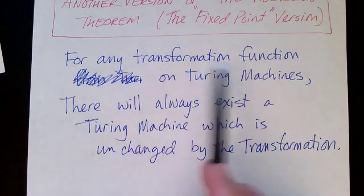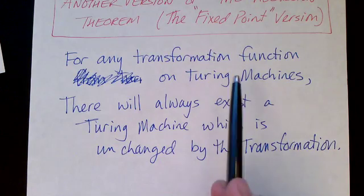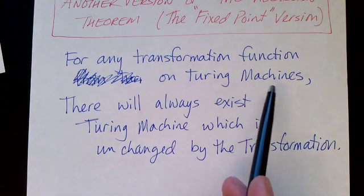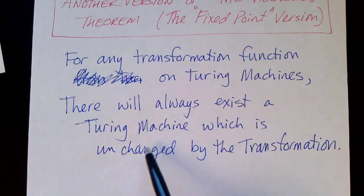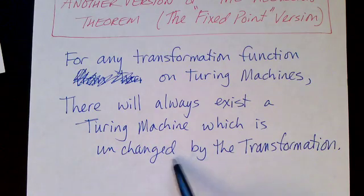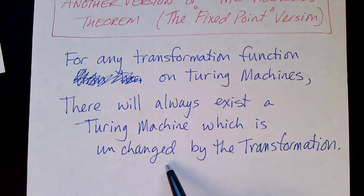For any function that takes a Turing machine and modifies it, turns it into another Turing machine, there's always some Turing machine for which this function, this transformation, will not do anything. There will always be a fixed point for this function.